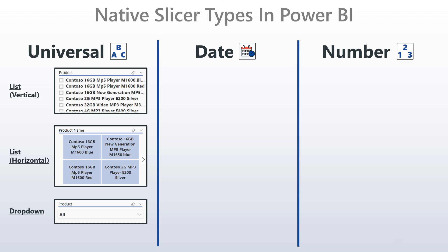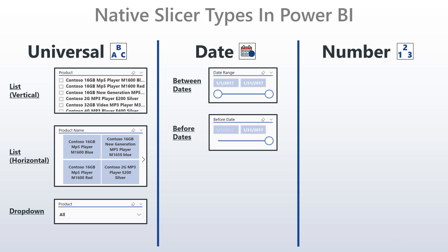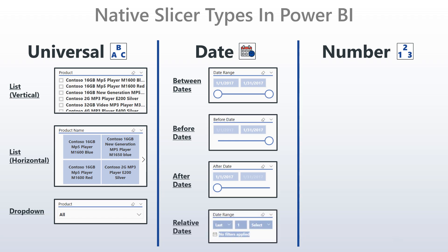Now for the date slicer types. You have the option to create a slicer that lets you filter your data between two dates, or a date range. You can also choose to only allow filtering before a certain date or filtering after a certain date. The last date type slicer is the relative date slicer, which lets the user choose a relative date range by the past, current, or future, and assign the number of intervals by day, week, month, or year — giving them a lot of freedom to easily look at their data within any time window.